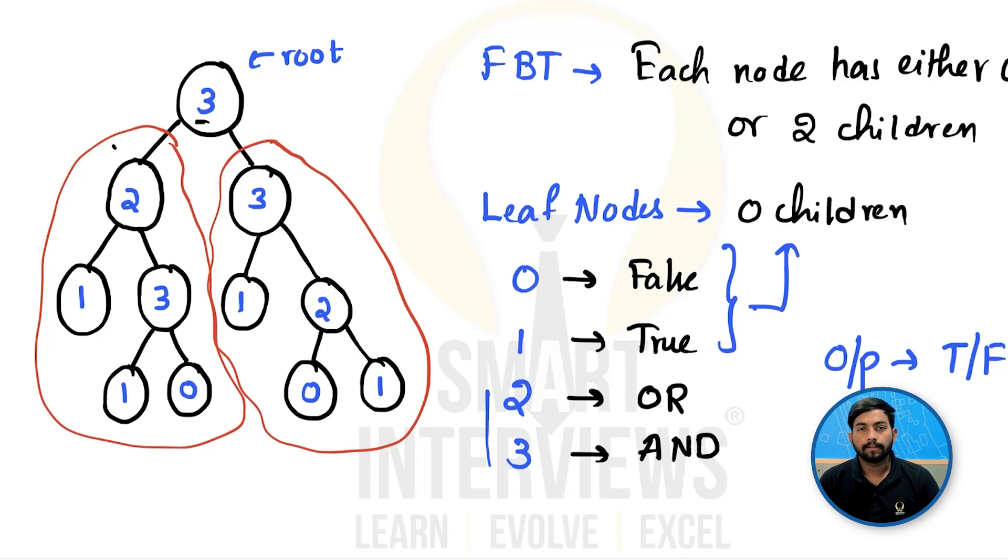We are currently at the left subtree's root. Now to evaluate the value at this root, we will have to evaluate again the left subtree here and here then perform the OR operation between these two values. Now if you go to the left subtree, it is a leaf node. A leaf node will directly have either false or true. At this node it is true. So we simply pass back true.